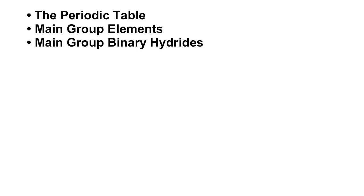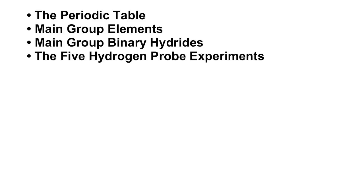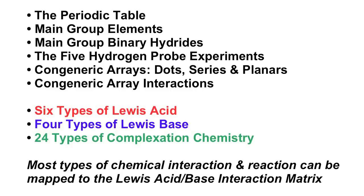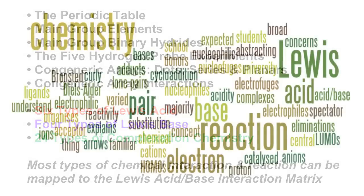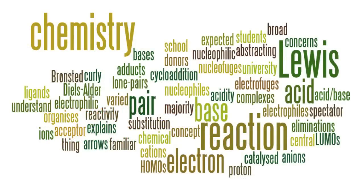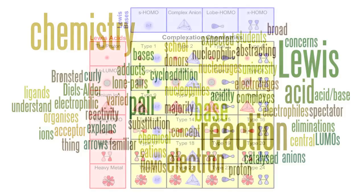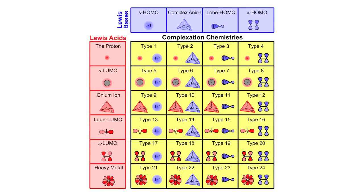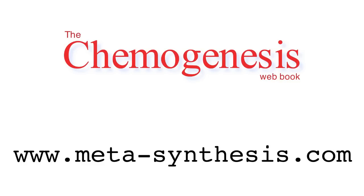To sum up: we start with the periodic table, the main group elements, main group elemental hydrides, and the five hydrogen probe experiments. Here we find congeneric arrays, six types of Lewis acid, four types of Lewis base, and 24 types of Lewis acid-base reaction chemistry. Most types of chemical interaction and reaction — electron pair donors and acceptors, anions, cations, lone pairs, ligands, spectator ions, HOMOs, LUMOs, nucleophiles, electrophiles, Brønsted acidity, proton-abstracting bases, Diels-Alder cycloaddition, etc. — can be mapped to the Lewis acid-base interaction matrix. Thank you very much.